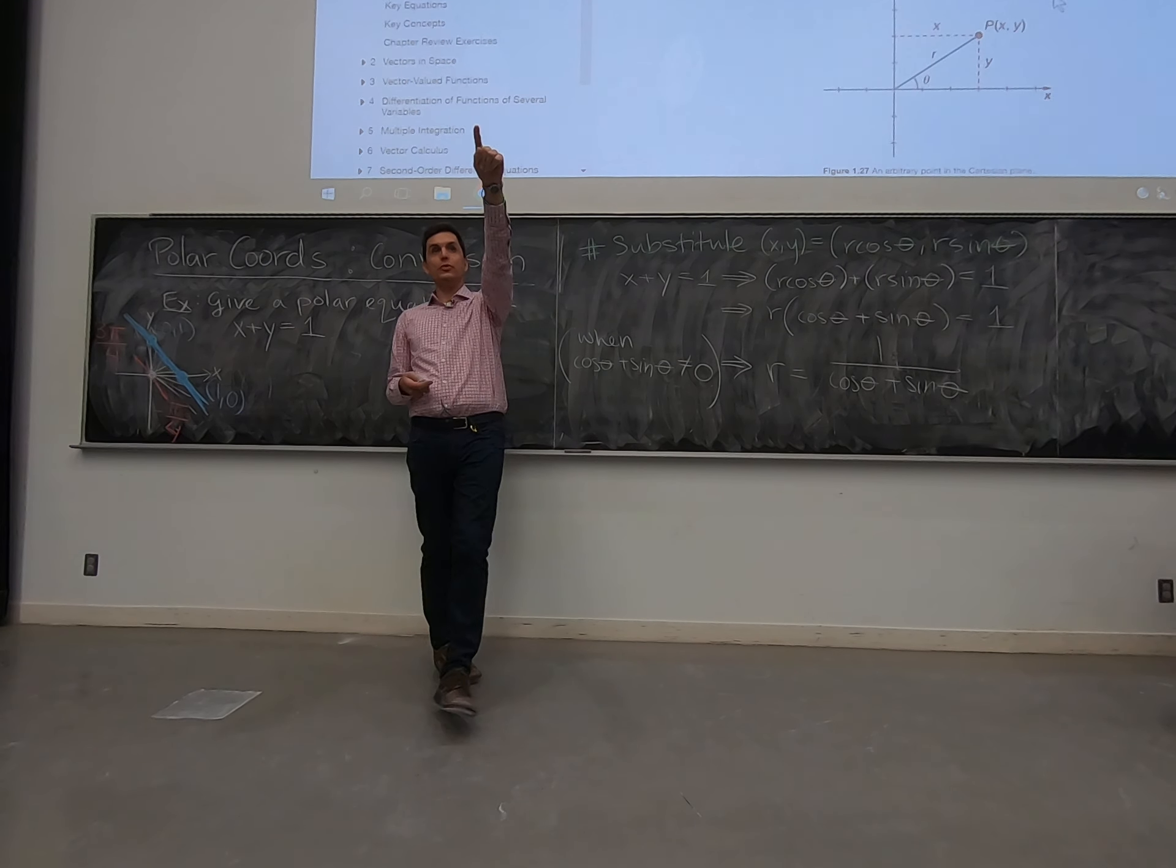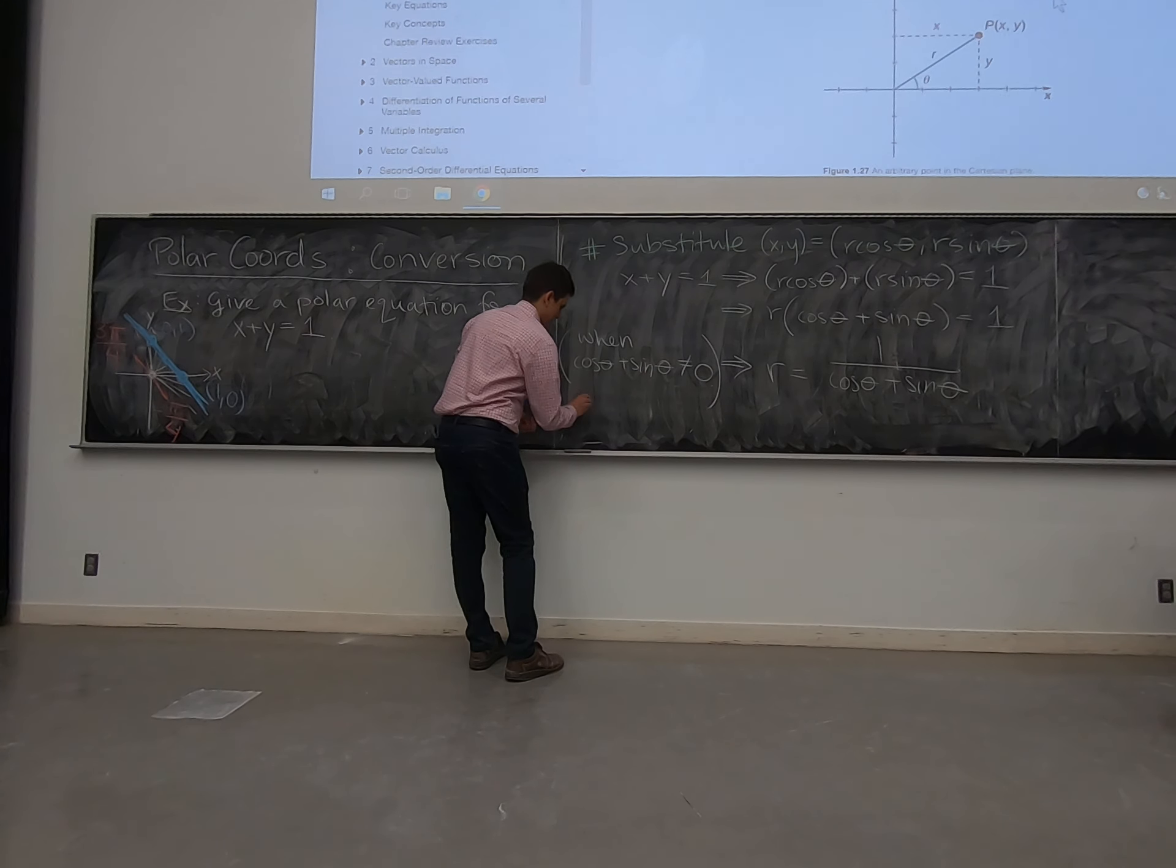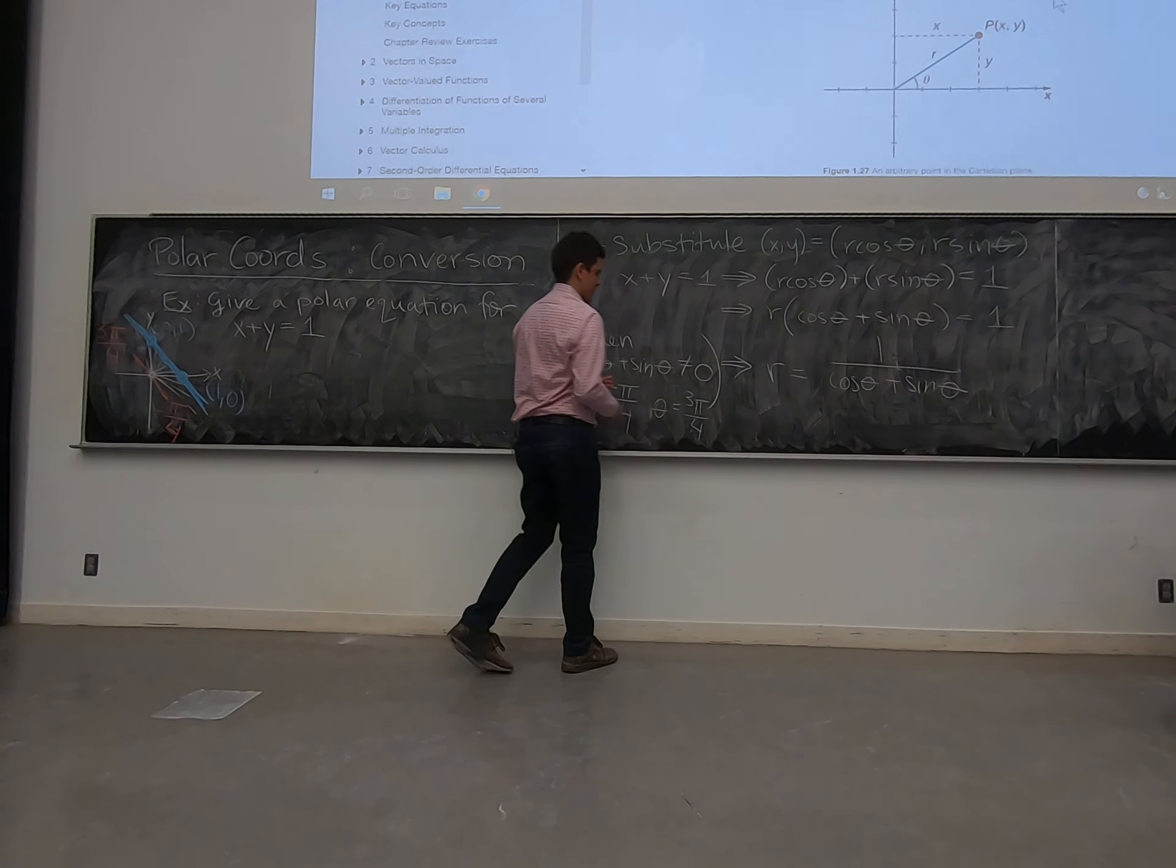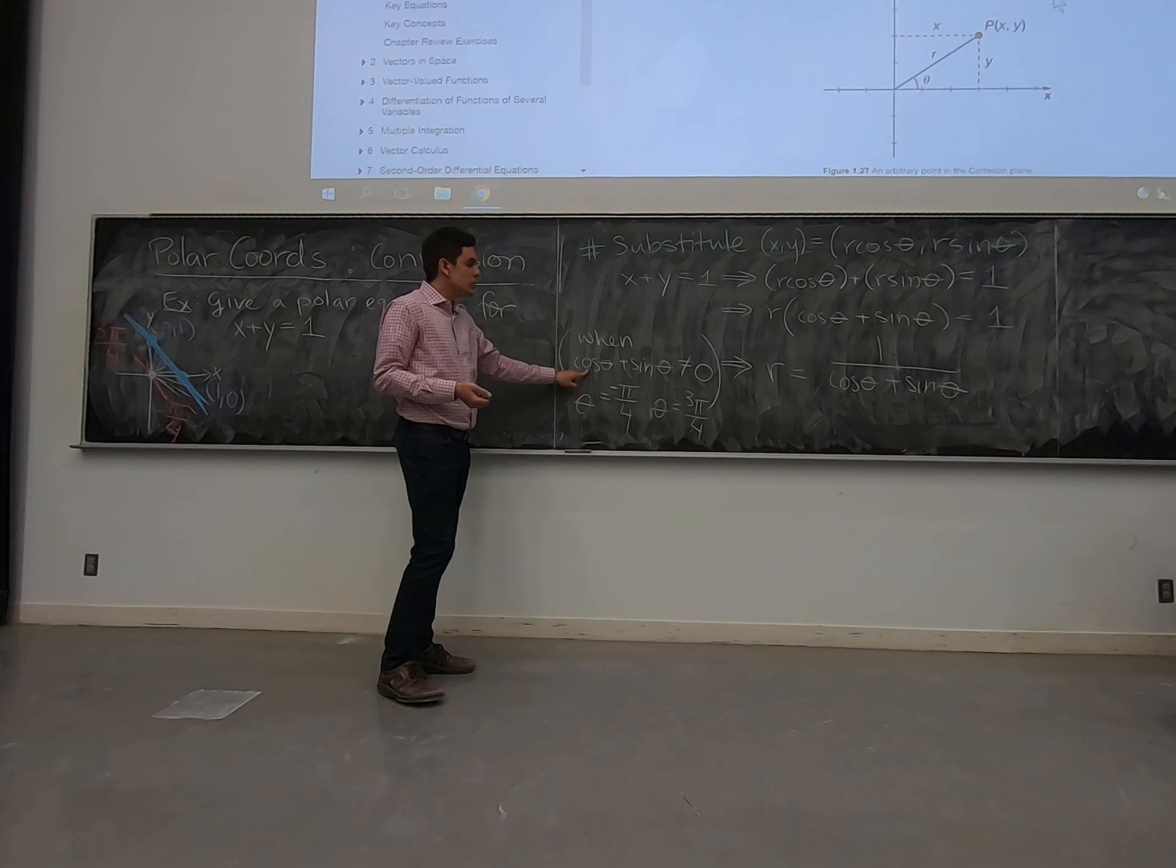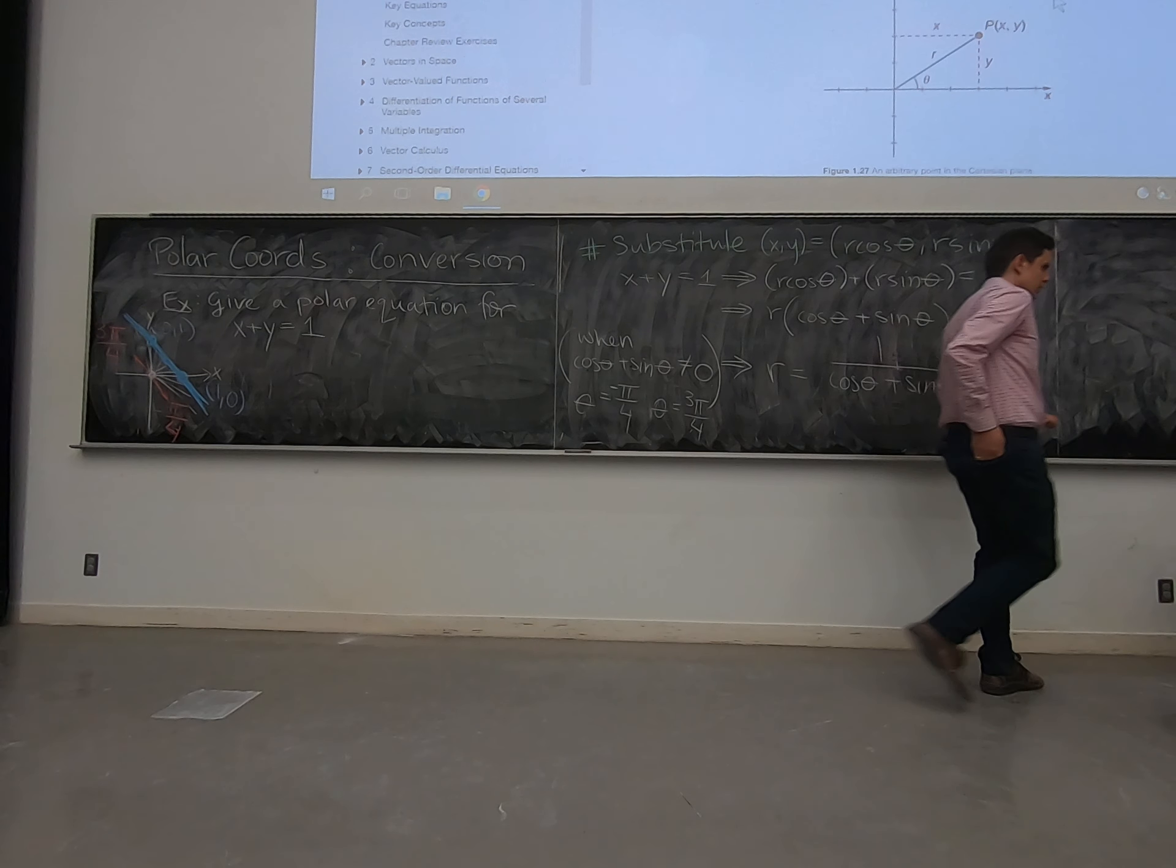If I plug in those numbers - cos of negative π by 4 is 1 over root 2, sin of negative π by 4 is negative 1 over root 2. We get 1 over root 2 minus 1 over root 2 gives me zero. In that case, my thing would blow up. Let's check it out - that's the picture we want.